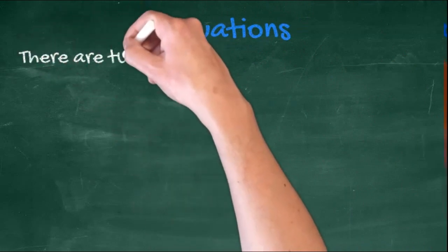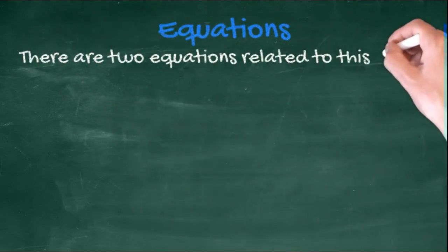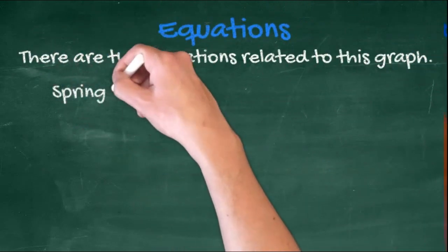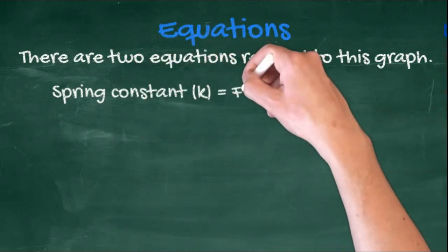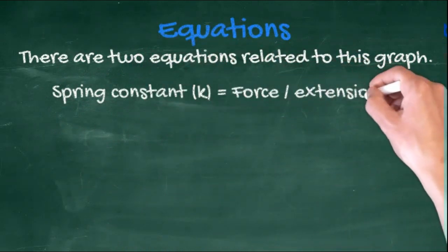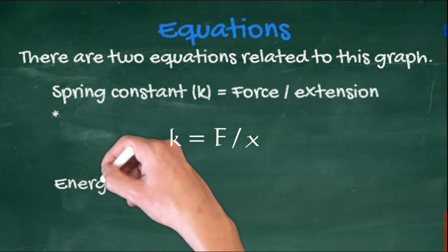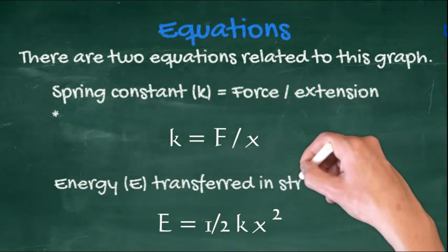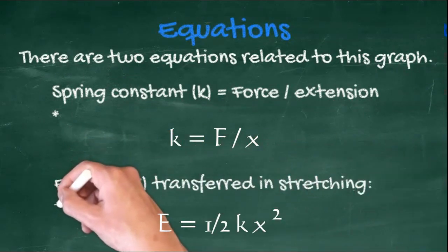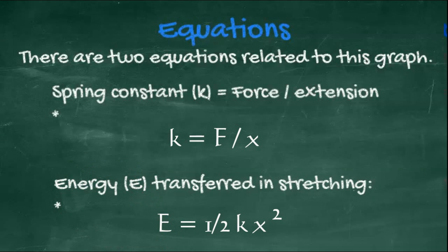There are two equations that relate to this graph. The spring constant, k, is equal to the force divided by the extension, or k equals f over x. The energy transferred in stretching the spring, E, is equal to a half kx squared. You need to know the first, and be able to use the second.